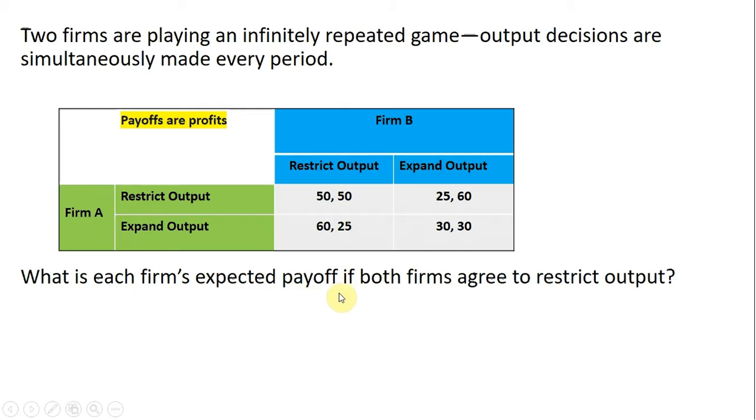What is each firm's expected payoff if both firms agree to restrict output? If both firms agree to restrict output, we'll have $50 and $50 of profit going to each firm.